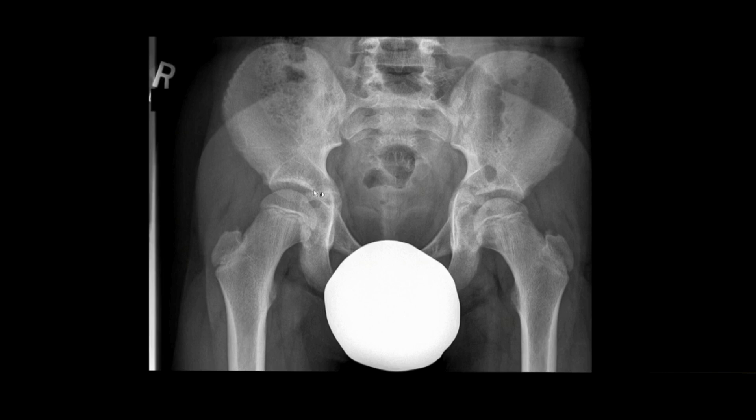For every hip radiograph, I closely follow the cortical margin of the femoral head and acetabulum, which should be relatively sharp. This allows me to appreciate subtle subchondral fractures, as in this case, increased mineralization in the femoral head suggesting osteonecrosis, and erosions suggesting inflammatory arthropathy.